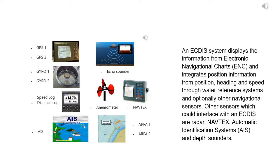The ECDIS system displays the information from Electronic Navigational Charts, ENC, and integrates position information from position, heading, and speed through water reference systems, and optionally other navigational sensors. Other sensors which could interface with ECDIS are radar, navtex, automatic identification systems, AIS, and depth sounders.